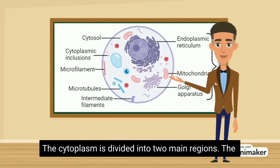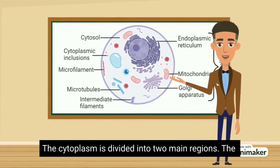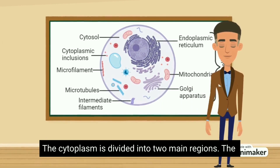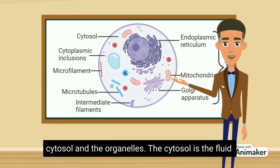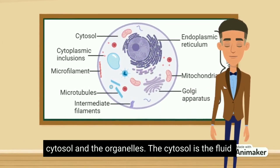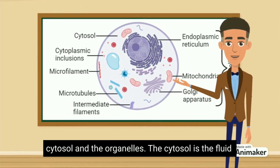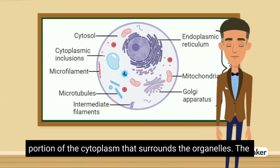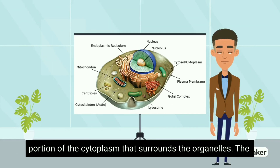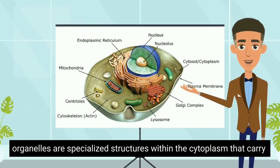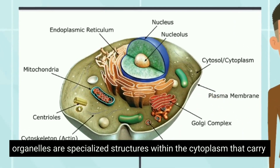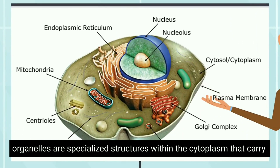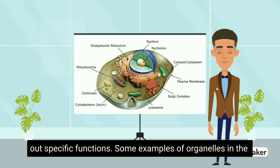The cytoplasm is divided into two main regions: the cytosol and the organelles. The cytosol is the fluid portion of the cytoplasm that surrounds the organelles. The organelles are specialized structures within the cytoplasm that carry out specific functions.